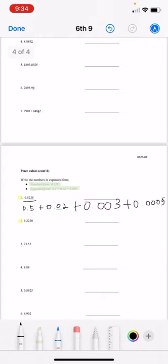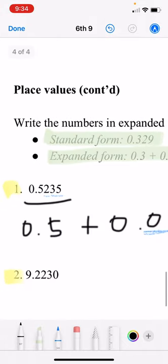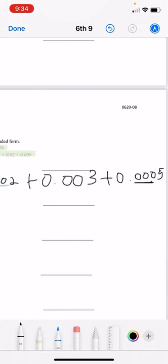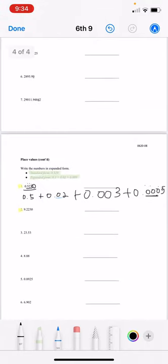Okay so notice notice notice five here right it has three digits before it right and then here it has three zeros before it okay so make sure that matches.